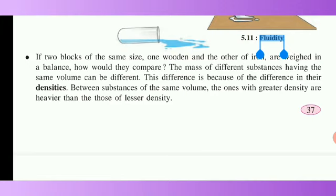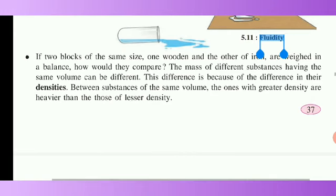Taking two blocks of the same size and weighing them shows that while the volume and size are the same, the mass and weight are different. The substance with greater density will be heavier, and one with lesser density will be lighter. Density describes this difference in mass for the same volume.